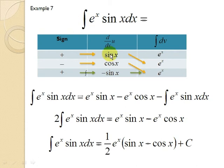If you differentiate sin(x) you get cos(x), and differentiate again you get negative sin(x). For e^x, you integrate it and you get e^x, and integrating again you get e^x.